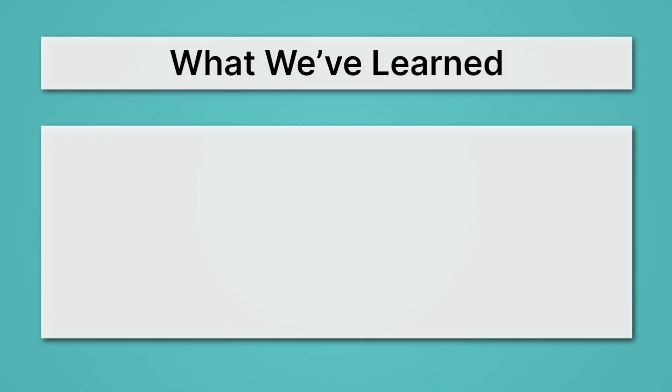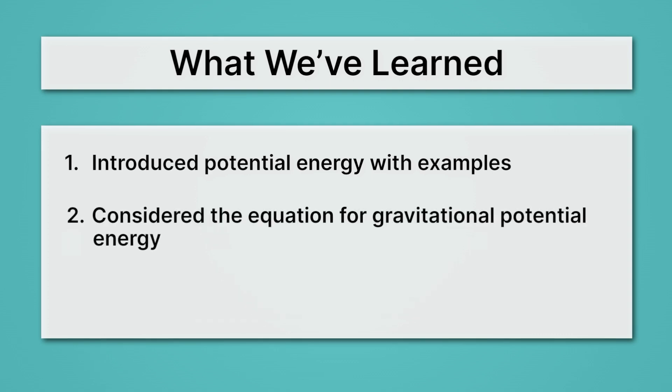Let's review what we've learned. First, we introduced potential energy with examples. We saw that potential energy is associated with arrangement, and that there are all sorts of types. Elastic potential energy, chemical potential energy, and gravitational potential energy. Then, we considered the equation for gravitational potential energy, which tells us that mass times gravity times height gives us the potential energy. And lastly, we learned to calculate gravitational potential energy using this equation.